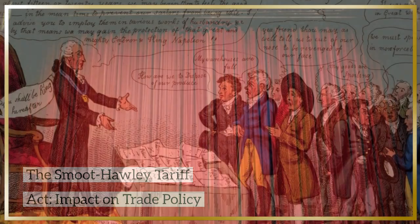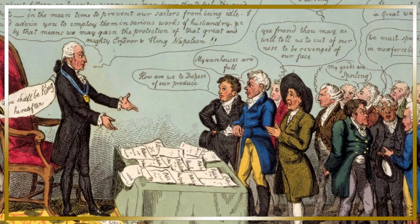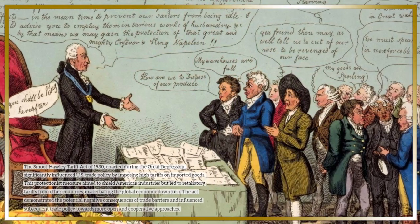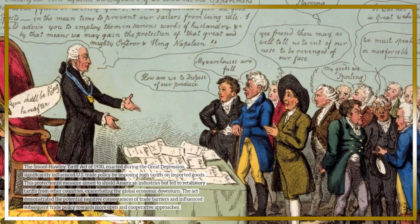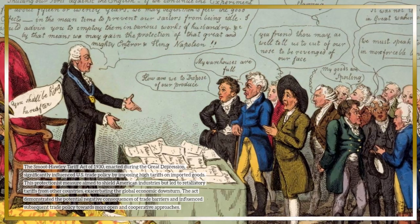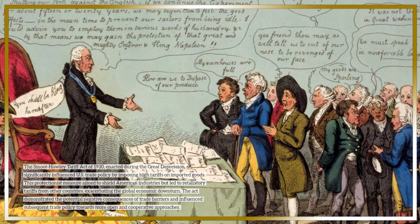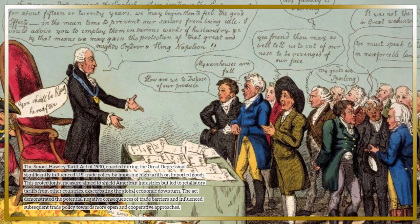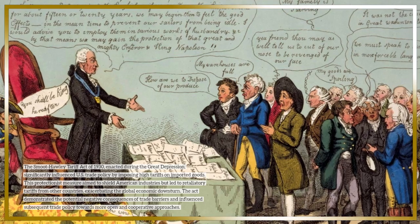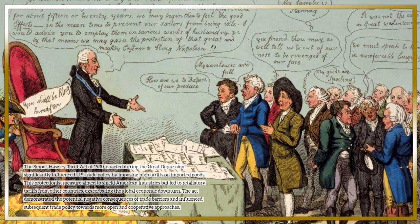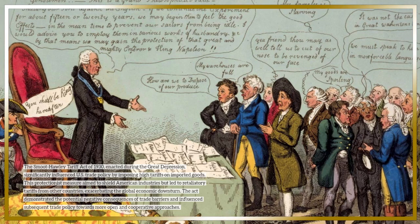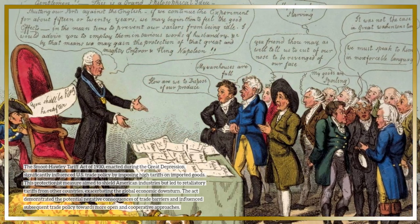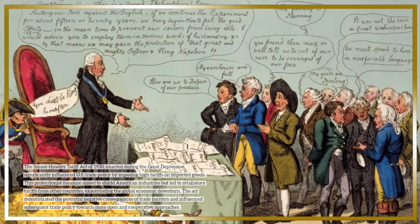The Smoot-Hawley Tariff Act of 1930, enacted during the Great Depression, significantly influenced U.S. trade policy by imposing high tariffs on imported goods. This protectionist measure aimed to shield American industries but led to retaliatory tariffs from other countries, exacerbating the global economic downturn. The act demonstrated the potential negative consequences of trade barriers and influenced subsequent trade policy towards more open and cooperative approaches.